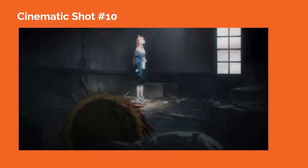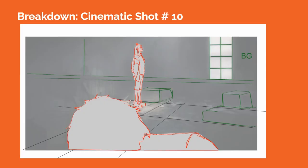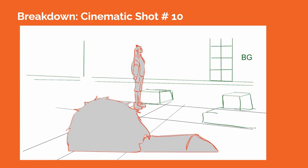In cinematic shot number ten, we see another camera angle within the same scene where the camera is now behind Denji, who is in the foreground out of focus. Power is in focus and we see her full body bathed in outdoor light pouring through the ceiling. The interior surroundings are largely dark, so Power really stands out in the frame due to her bright lighting. The perspective lines inside the interior also direct our eyes toward Power, and a longer lens might be used here.